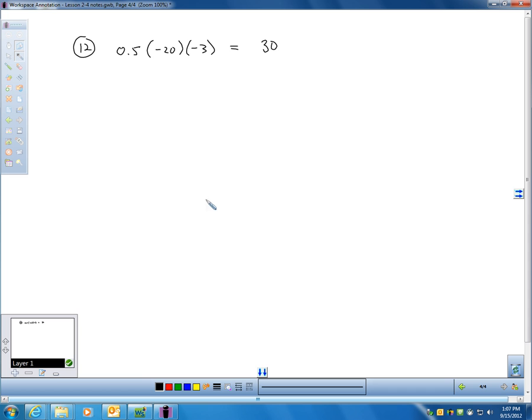Or, if you took a problem like number 18. 18, we have negative 3 quarter times 1 third. I'm sorry, negative 1 third times negative 8 ninths. Okay, well, the first thing I notice is I have 1, 2, 3 negatives being multiplied together. Well, I know right now the answer is negative. I don't have to worry about the signs anymore. I already know the answer is negative.